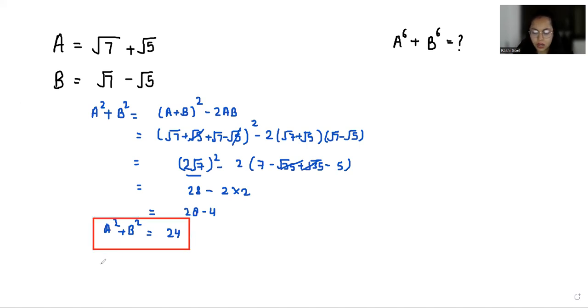Now we have to find A power 6 plus B power 6, so we can write A square whole cube plus B square whole cube. A cube plus B cube equals A plus B, in bracket A power 4 minus.